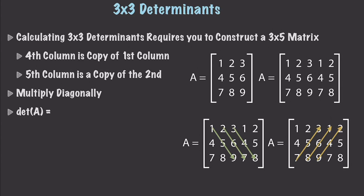Now to calculate a 3x3 determinant is a good bit more complicated. What you're going to do is construct a 3x5 matrix whenever you have a 3x3 to calculate its determinant. The fourth column you create is just going to be a copy of the first, and the fifth column is going to be a copy of the second. That's how you turn this 3x3 matrix into this 5x3 matrix.